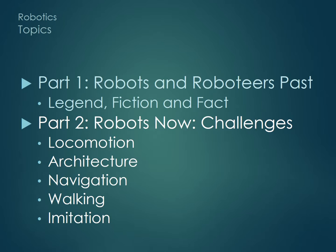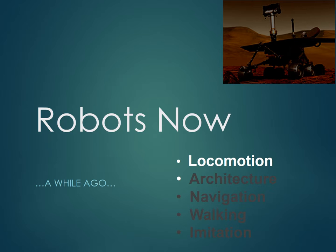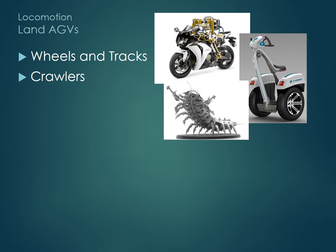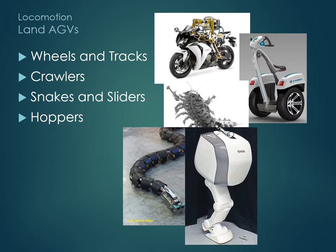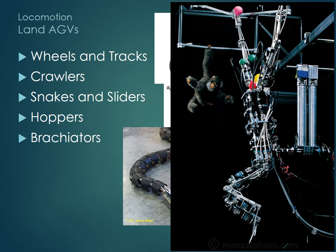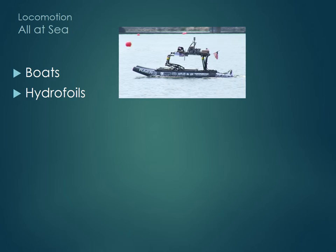This part introduces some of the challenges facing modern roboticists to set the scene for our latest study, starting with locomotion. Robots have been built to match just about any way of getting around imaginable on land, sea or air. The Brachiator here, for example, swings ape-like through the trees — an interesting but somewhat unlikely way to beat the rush hour.